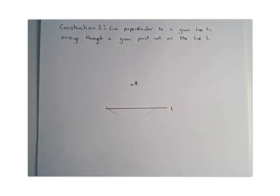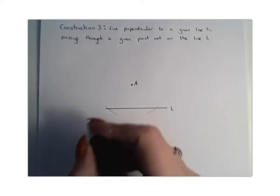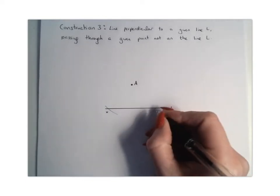Okay, so I've just drawn two arcs there where they intersect my line L, and I'm going to label them X and Y.